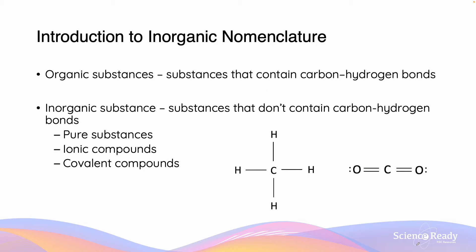In the context of chemistry, an organic substance is one which contains carbon to hydrogen bonds, and thus an inorganic substance is one which does not contain carbon to hydrogen bonds. On the right we can see the compound methane, CH4, which consists of four carbon to hydrogen bonds, and thus is considered to be an organic compound.